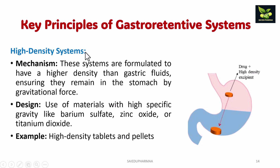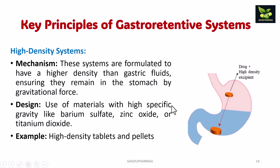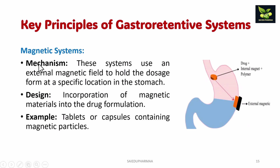Next comes high density systems. These systems are formulated to have a higher density than gastric fluids, ensuring that they remain in the stomach by gravitational force. The materials used have a high specific gravity, such as barium sulfate, zinc oxide, or titanium dioxide. Examples include high density tablets and pellets.